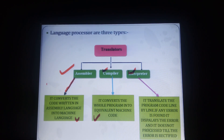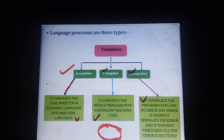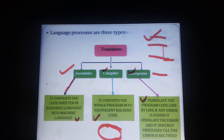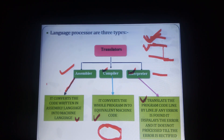The interpreter translates program code line by line — first line, second line, third line, fourth line — converting each and every line. If an error is found on the second line, the program will be stopped. When we rectify the error, then the program moves to the next line. That is how the interpreter works.